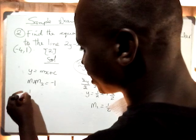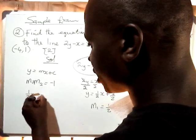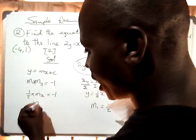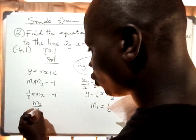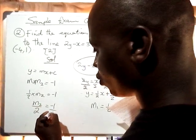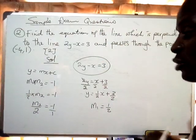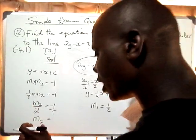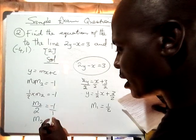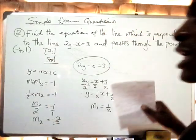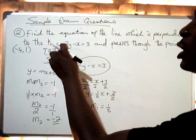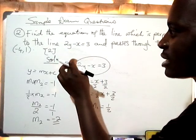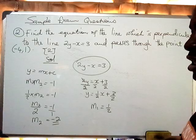We now say one-half multiplied by m2 equals negative 1. Cross-multiplying to find m2: m2 equals 2 times negative 1, so m2 equals negative 2. The gradient of the line perpendicular to 2y minus x equals 3 is negative 2.